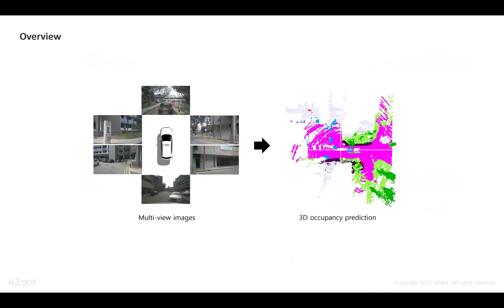The task is to predict occupancy state and semantic label for a voxel in 3D space given multi-view images.